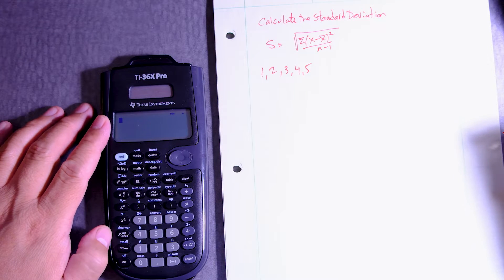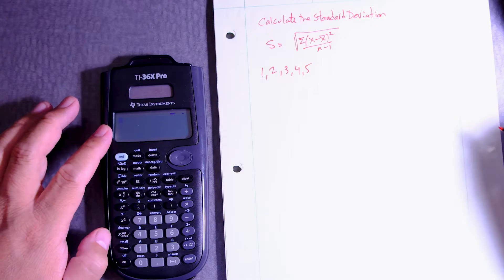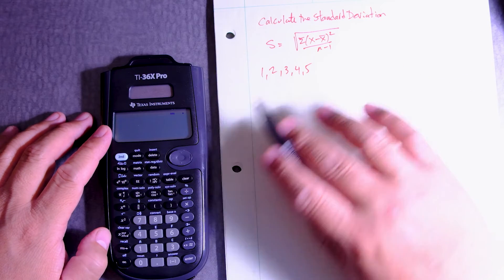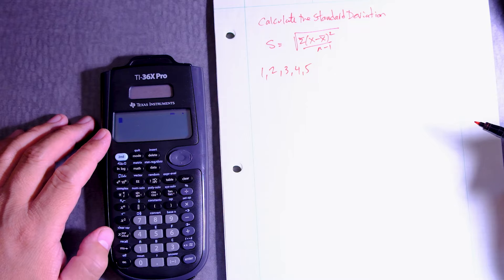So this is the TI-36X Pro calculator and we want to calculate the standard deviation using the built-in function of the calculator. How do we do that?